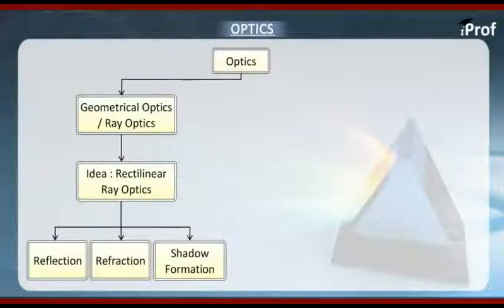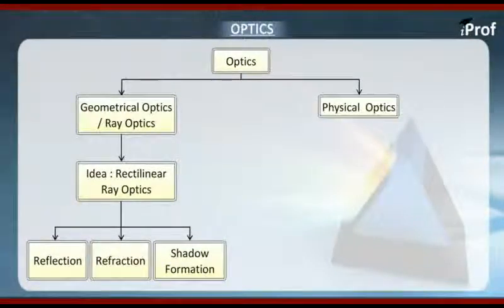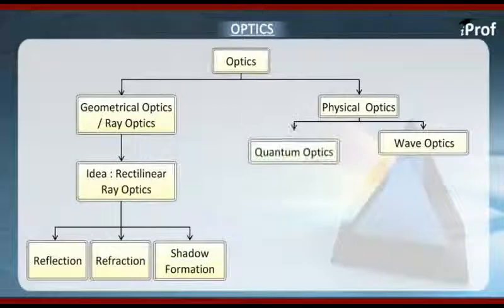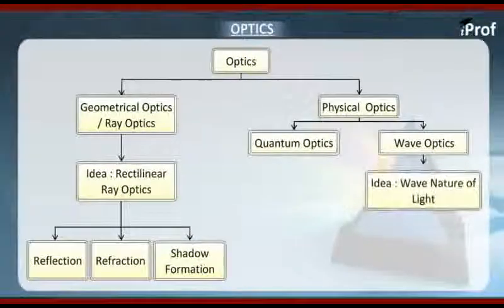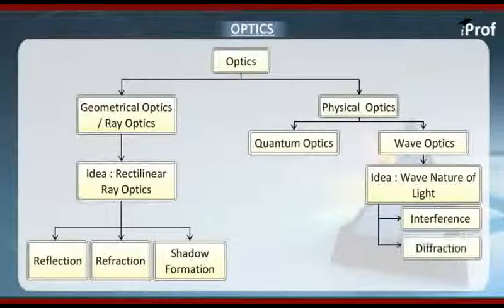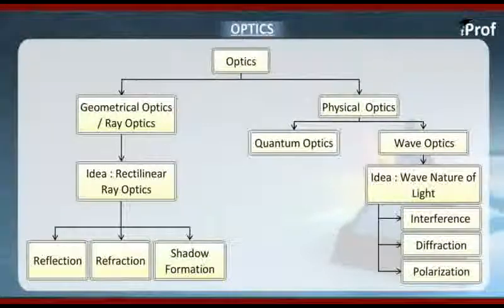The other classification is physical optics, which is further divided into two branches: wave optics and quantum optics. Wave optics is based on the idea that light travels in the form of waves. Based on this idea we are going to study three important topics: interference, diffraction, and polarization.